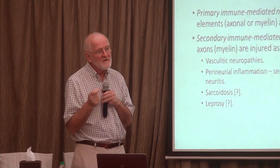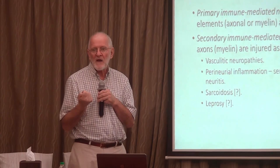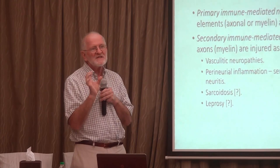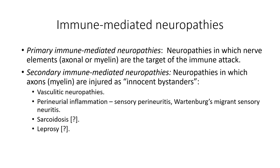Vasculitic neuropathies represent an immune-mediated disorder of blood vessels that secondarily affects peripheral nerves. Perineural inflammation is rare but there is a condition of sensory perineuritis that may be the same or different from Wattenberg's migrant sensory neuritis — two perineural conditions that can secondarily affect the nerve. We don't quite know where sarcoidosis fits in, but it is certainly a disorder of the immune system that can affect nerves.